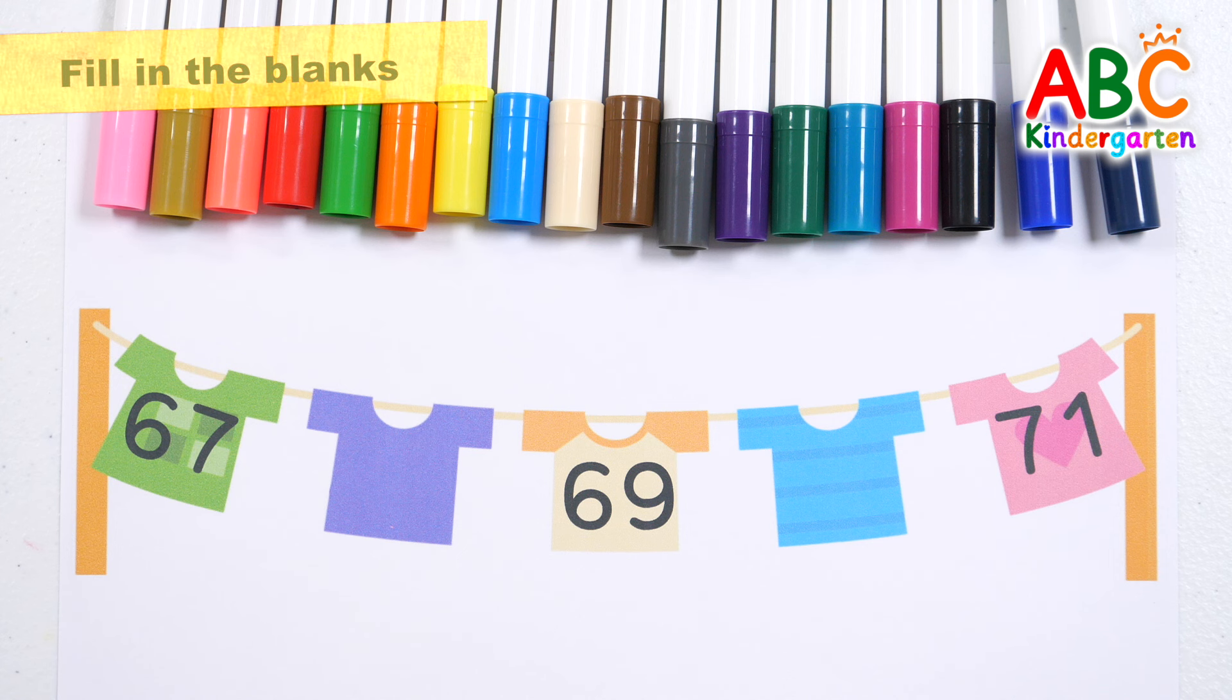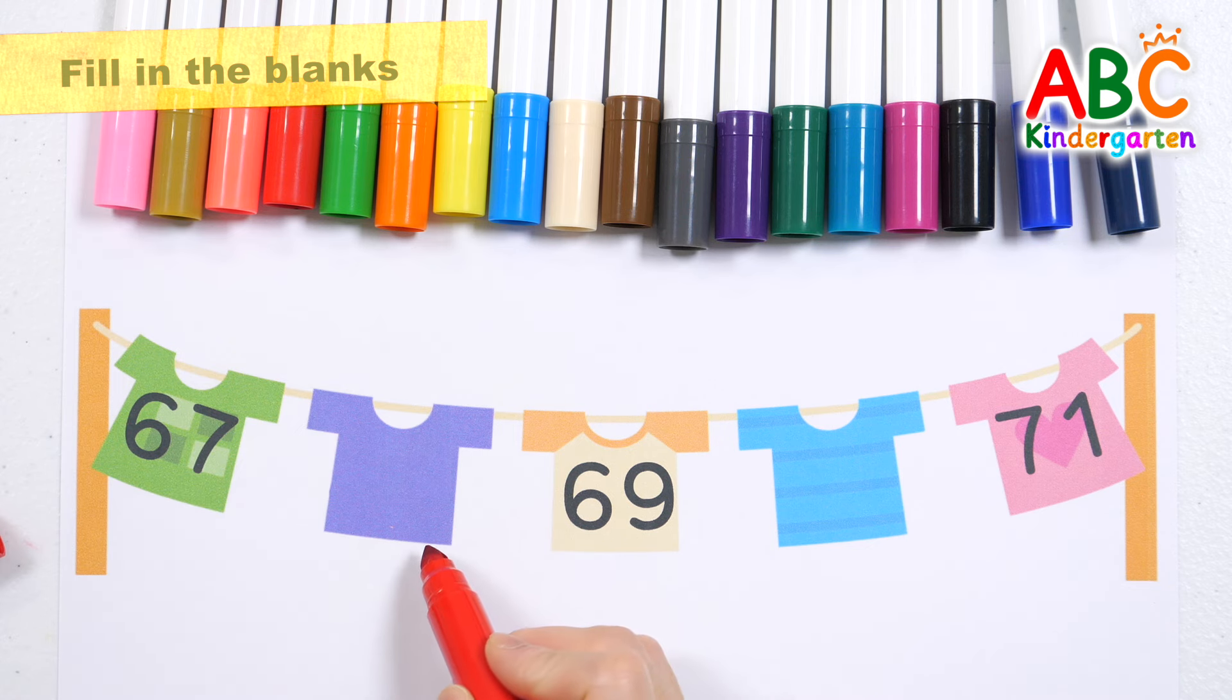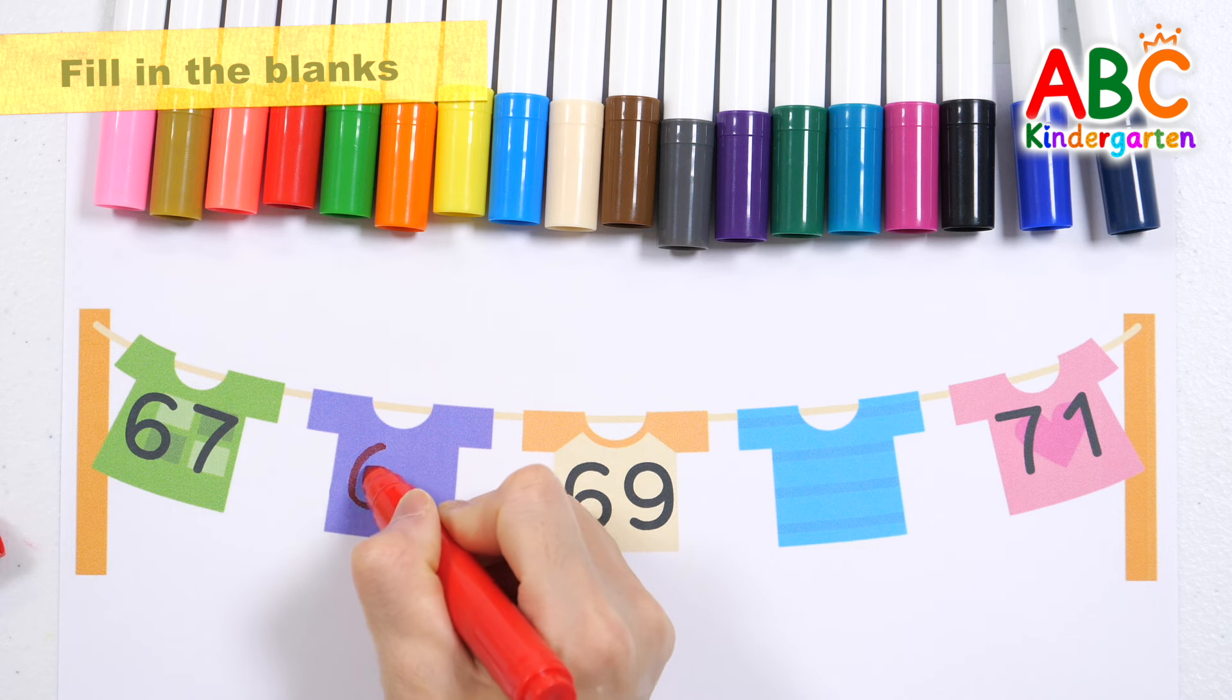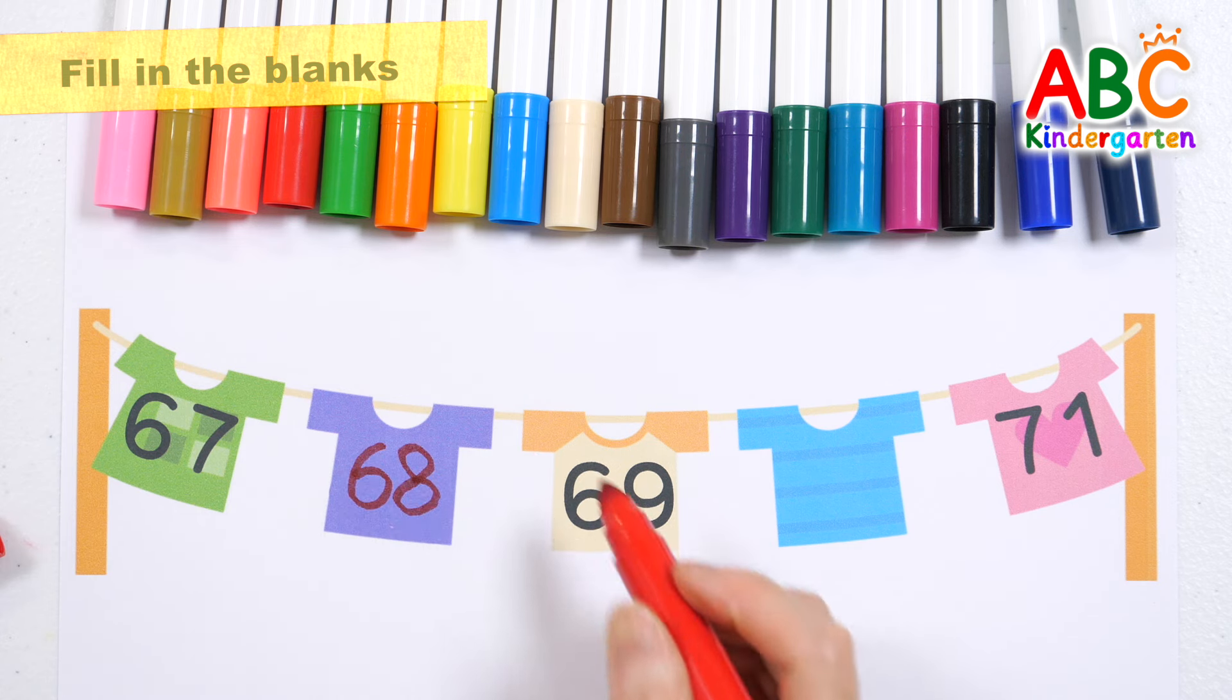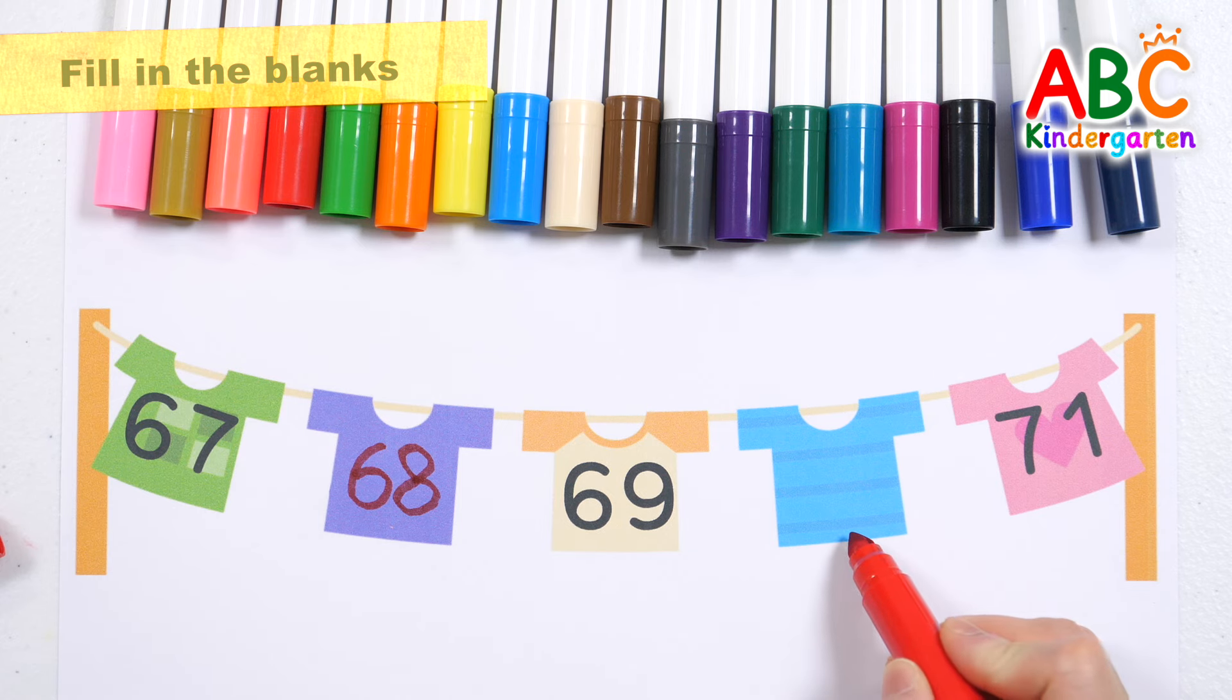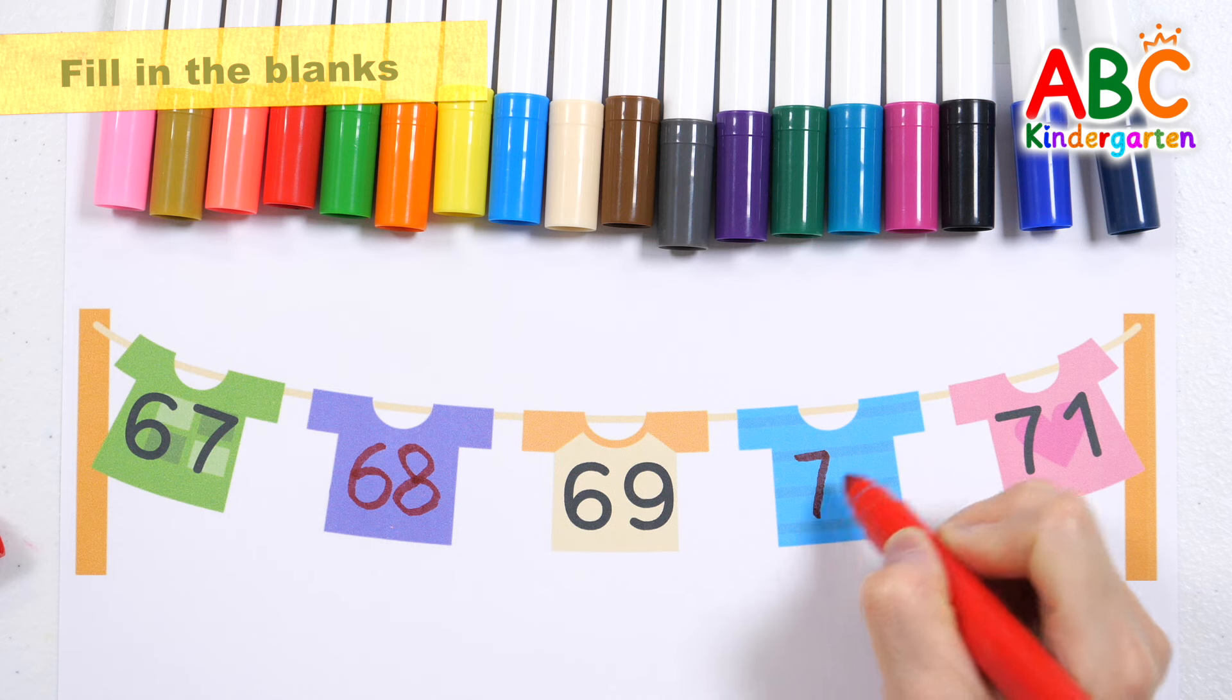Let's think about what numbers go on the purple and blue t-shirts. 67. What number comes after 67? 68. What number comes after 69? That's right! 70.